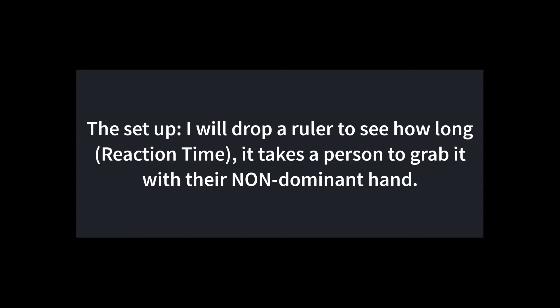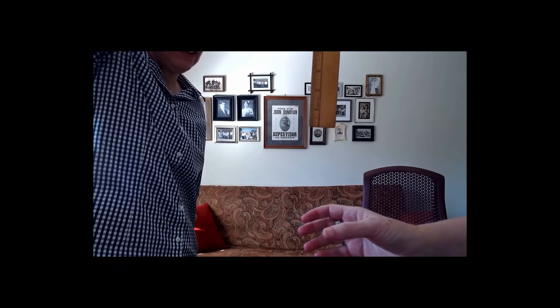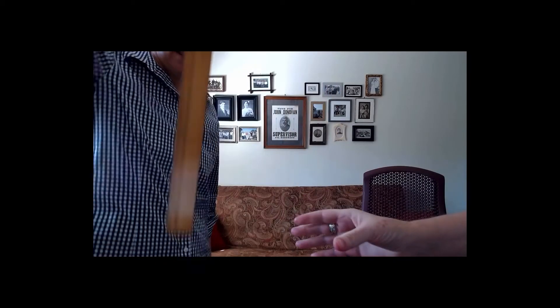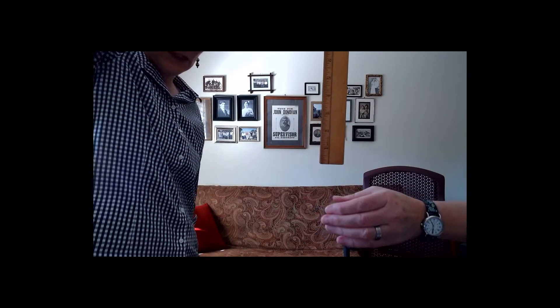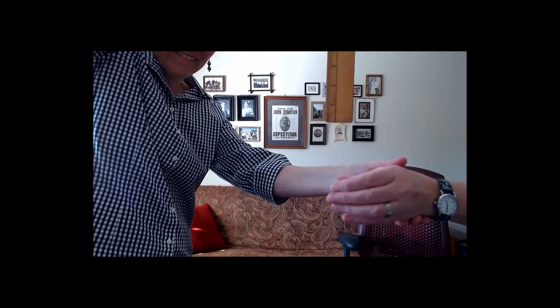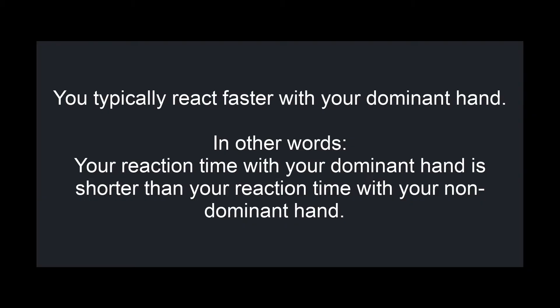We're actually working with a left-handed person. Using their right hand (the non-dominant hand), when I let go they catch it when it's fallen about 12 inches — a full foot. Now with the dominant left hand, they catch it when the ruler is only about four inches down. They caught it much more quickly with their dominant hand, confirming that your reaction time with your dominant hand is faster than with your non-dominant hand.